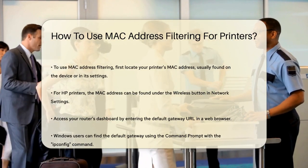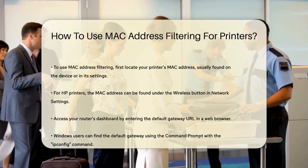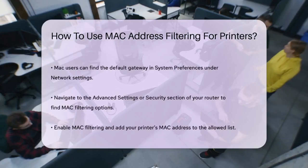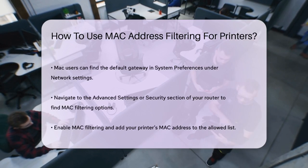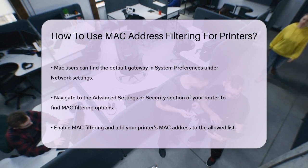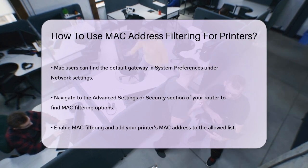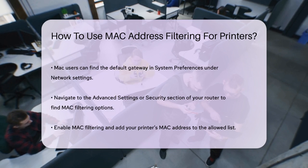Once you're logged into your router, navigate to the Advanced Settings or Security section, where you'll find the MAC filtering options. Here you'll have the option to enable MAC filtering and add the MAC addresses of the devices you want to allow or block. To add your printer's MAC address, select the option to allow specific MAC addresses and add the printer's address to the list. Save the changes and ensure that MAC filtering is enabled.